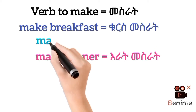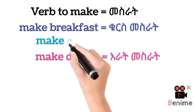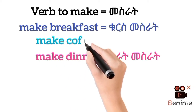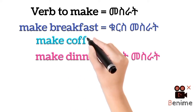Look at these examples. 'Make breakfast' — make breakfast means cook breakfast. You can also use 'make coffee.' My sister always makes coffee — that means she prepares coffee. 'Make dinner' — make dinner means cook dinner.